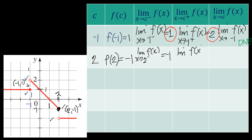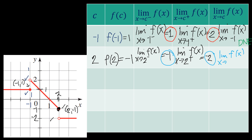What about the limit of f of x as x approaches 2 from the right? Pansinin natin ang right ng 2 — saan papunta ang y habang ang x ay papalapit ng papalapit sa 2? Hindi siya gumalaw — it is constant here, a portion of a constant function. The limit from the right of 2 is equal to negative 2. Negative 2 is not equal to negative 1, therefore the limit of f of x as x approaches 2 does not exist — kasi hindi pantay yung dalawa.